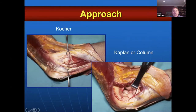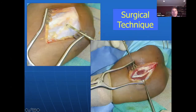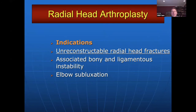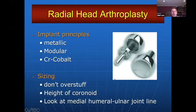Regarding approach — a Kocher approach is the old approach, which I don't use often because the LCL is kind of in front. I prefer a Kaplan or column approach where the LCL is behind us and I can see the radial head and anterior joint. Surgical technique: if I go lateral to look at the radial head, I want to stay above the equator of the capitellum and above the equator of the radial head. If you go more than two centimeters down the radial neck, look for the posterior osseous nerve. If we can't fix the radial head, arthroplasty concepts: if you cannot fix it, you should probably replace it for stability because there's associated bony and ligamentous instability and elbow subluxation.